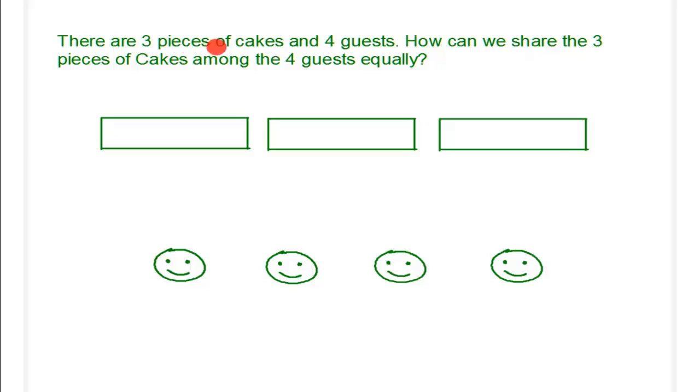As you can see, there are three pieces of cakes and four guests. How can we share the three pieces of cakes among the four guests equally?